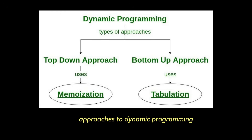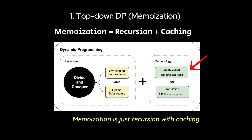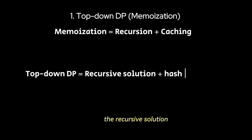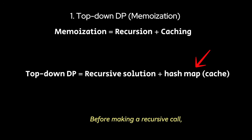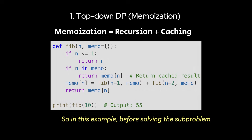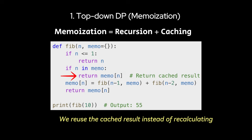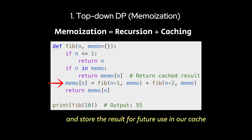Now let's talk about the two approaches to dynamic programming. Approach one is known as top-down DP, or memoization — these are used interchangeably. Memoization is just recursion with caching. Instead of recomputing the same values over and over, we store already computed results in a dictionary or array and reuse them. We start with the vanilla recursive solution, then use a hash map to store already computed values. Before making a recursive call, we check if the result is already cached. If it was not solved before, we compute it recursively and store the result for future use in our cache.